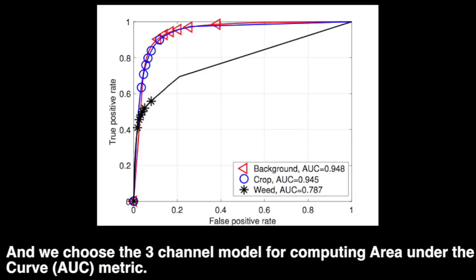For the three-channel model, we also consider the AUC metric for quantitative evaluation, as shown in the figure. There are small performance variations compared to the F1 score. However, as these measures capture different classifier properties, they cannot be directly compared.